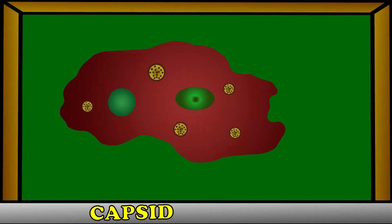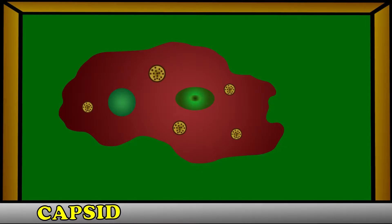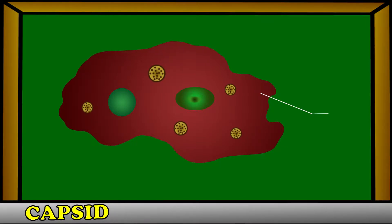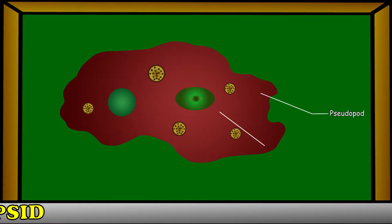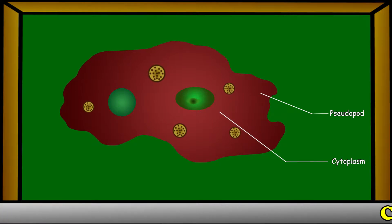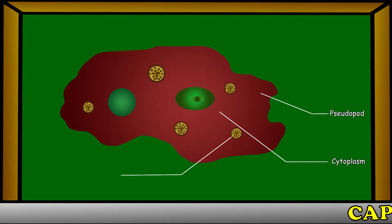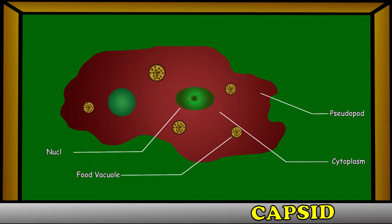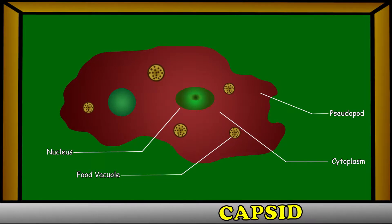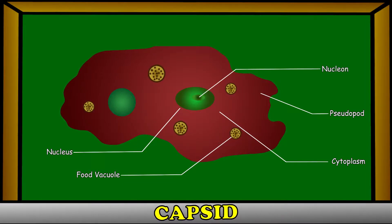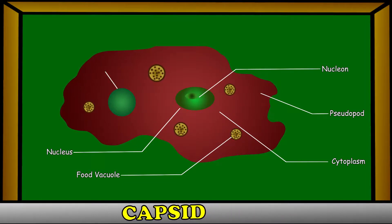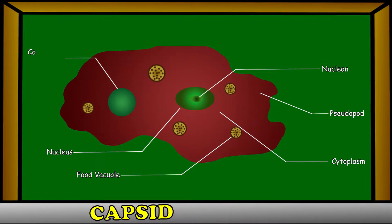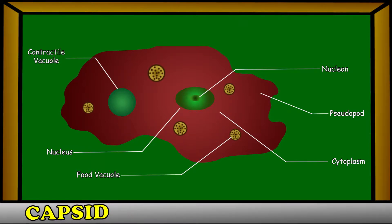Unicellular organisms like amoeba generally consist of pseudopods, cytoplasm, food vacuoles, nucleus, nucleolus, and contractile vacuoles.